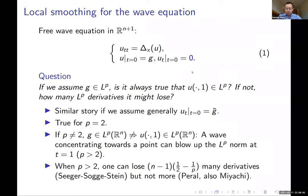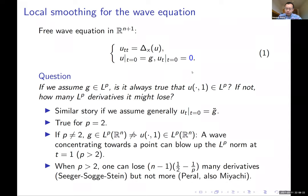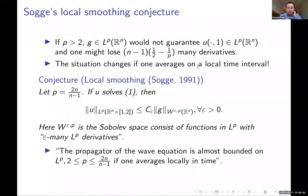Seeger-Sogge-Stein proved that it's possible to lose this many derivatives in the more general Fourier integral operator setting. It's also a classical result that you can lose at most this many derivatives, proved by Perot and also Miyachi. These are the classical results about this fixed-time question.